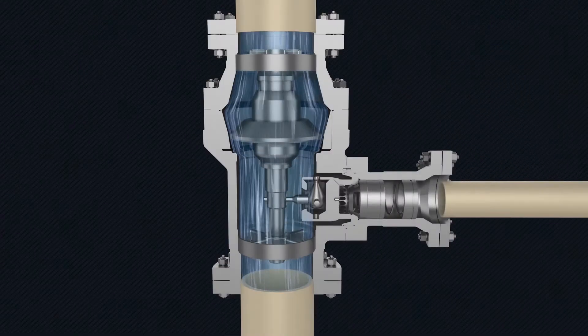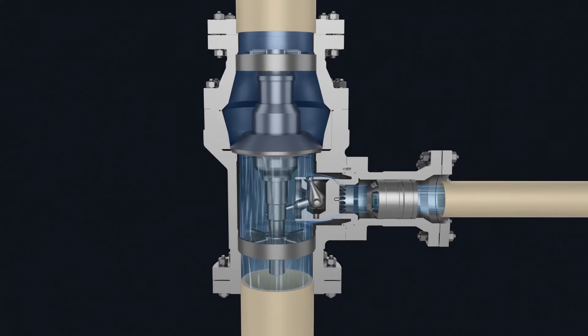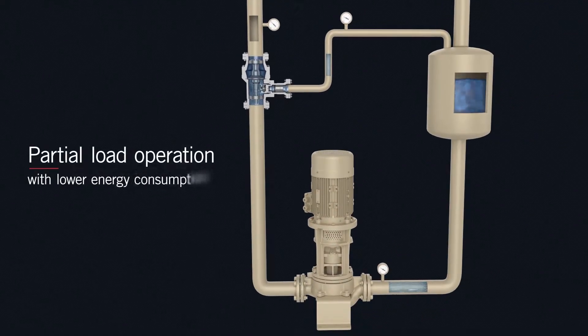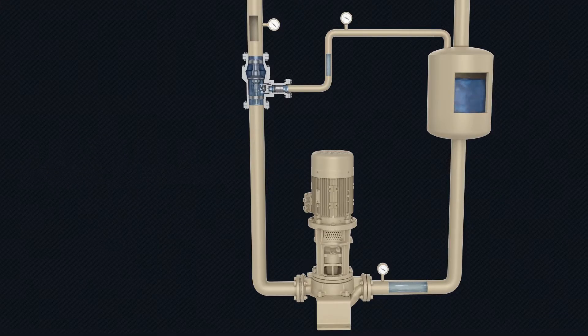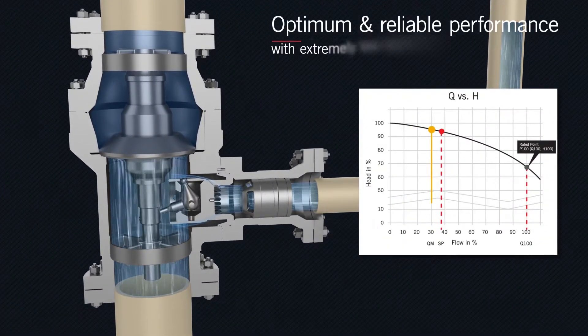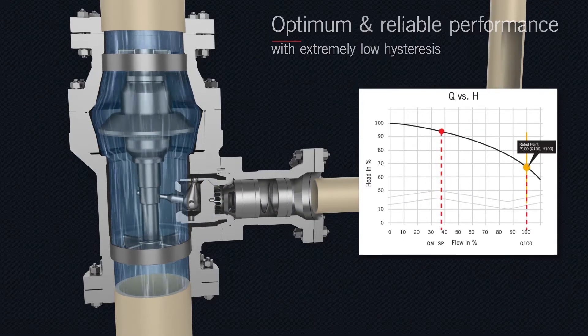The modulation bypass function with a robust control bushing design allows partial load operation at lower energy consumption, resulting in operational cost savings. The stable valve function with extremely low hysteresis enables optimum and reliable pump performance and increased pump life.